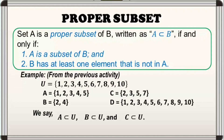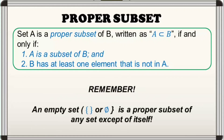Ganun din si set B at set C — sila ay proper subsets ni set U. But set D is not a proper subset of set U. Totoo ang una na si set D ay subset ni set U pero walang element si set U na wala si set D, kaya pwede nating sabihin na si set D ay subset ni set U pero si set D ay hindi proper subset ni set U. Nilalagyan lang natin ng slash ang proper subset symbol para sabihin na hindi siya proper subset. Remember that an empty set is a subset of itself but it is not a proper subset of itself.